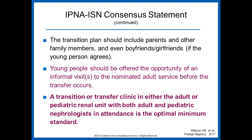The transition plan should include parents and other family members and even boyfriends and girlfriends. Young people should be offered the opportunity of an informal visit or visits to the nominated adult service before the transfer occurs. A transition or transfer clinic in either the adult or pediatric renal unit with both adult and pediatric nephrologists in attendance is the optimal minimum standard — giving young adults exposure to adult providers before transfer to make the process more seamless.